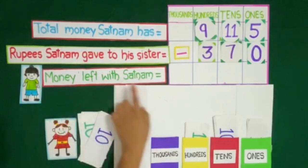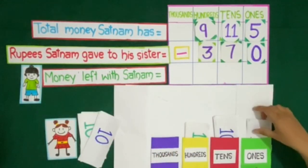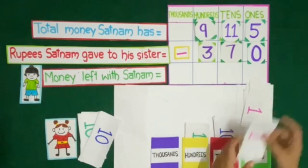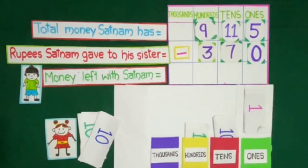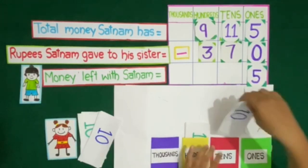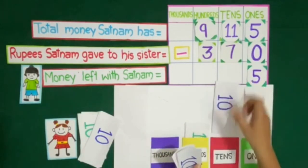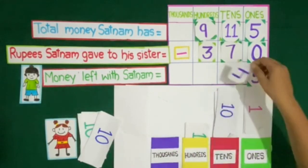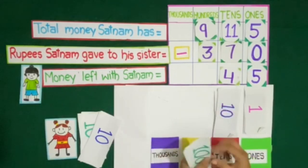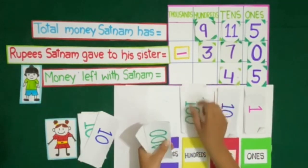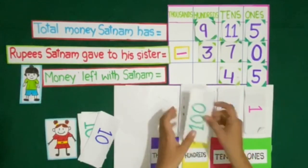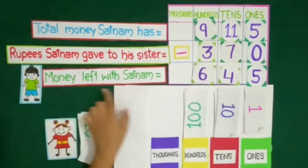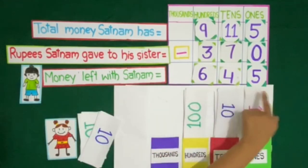Now we will count the money left with Satnam. Count 1 rupee notes: 1, 2, 3, 4, 5 — that is 5 ones. Count 10 rupee notes: 10, 20, 30, 40 — which means 4 at 10's place. Then count 100 rupee notes: 100, 200, 300, 400, 500, 600 — which means 6 at 100's place. So the money left with Satnam is equal to 645 rupees.